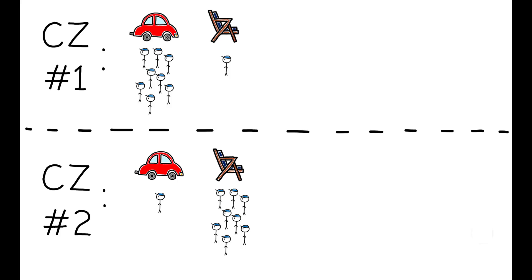To illustrate, consider two hypothetical CZs. In 1970, the majority of workers in the first market were employed in the automotive industry, while the majority in the second market were employed in the furniture industry.